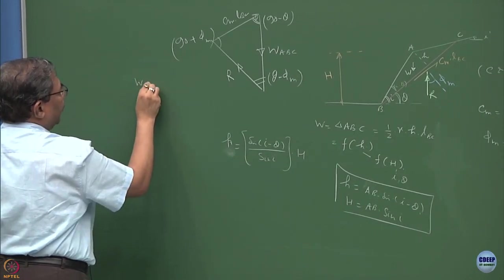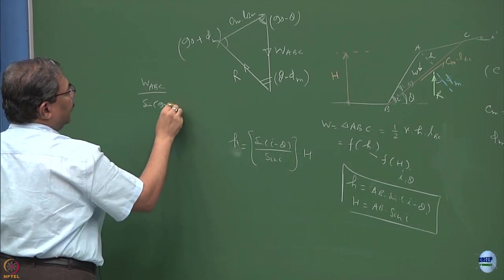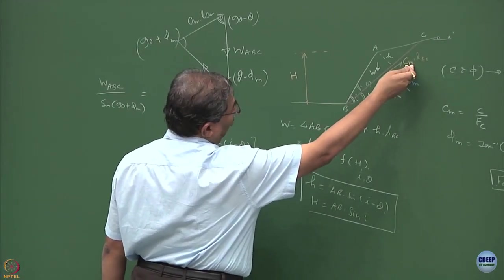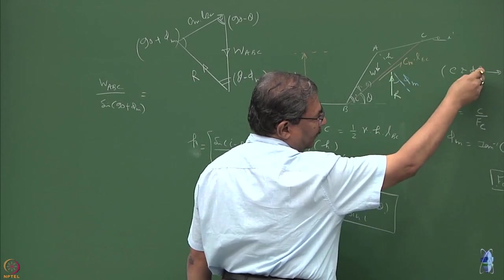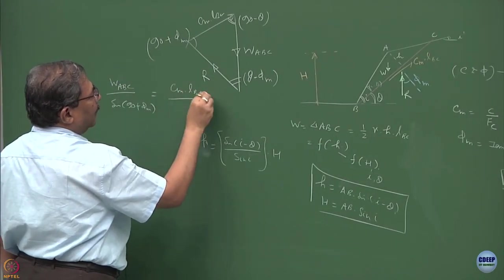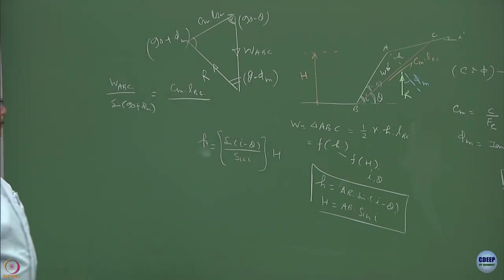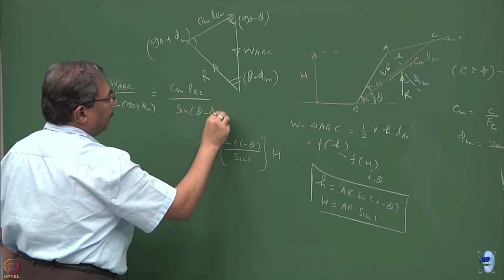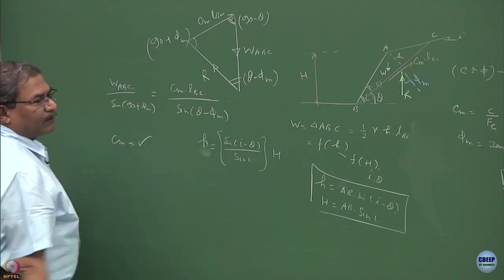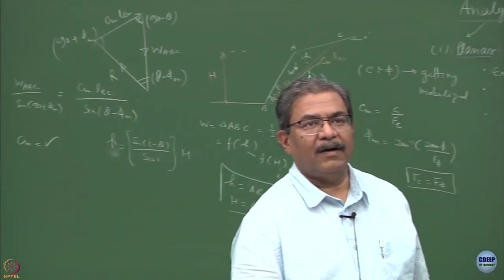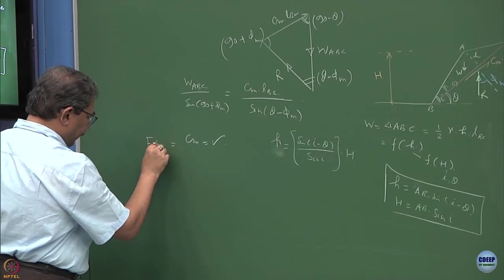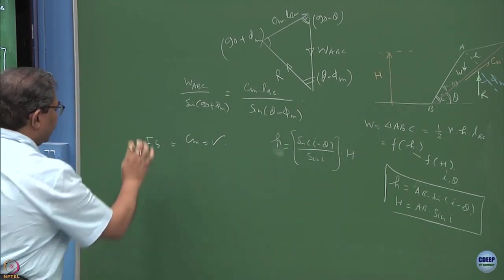This is ABC which we have obtained. So W of ABC divided by sin 90 plus phi m equals to what is the principal unknown. How much CM is getting mobilized? I do not know. So I have to obtain C value, phi value. I do not know even factor of safety sometimes. So I have to assume and then go ahead. So this will be equal to CM into LBC divided by sin of theta minus phi m. What am I going to get from here? I am going to get the value of CM from here. So once you have got the value of CM, how are you going to use this? This CM if I correlate it with the factor of safety or stability number both ways, I will prefer to use the stability number over here.